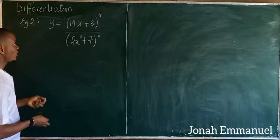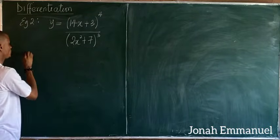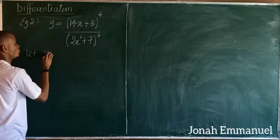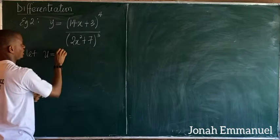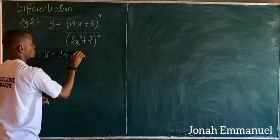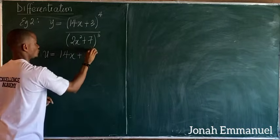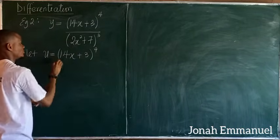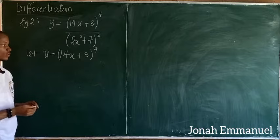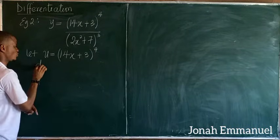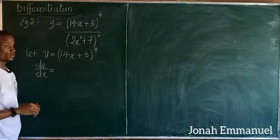As usual, I'll call my numerator u. So let u be equal to the numerator: (14x + 3) all to the power 4. This looks like a chain rule differentiation question, so I'll find du/dx using the chain rule.